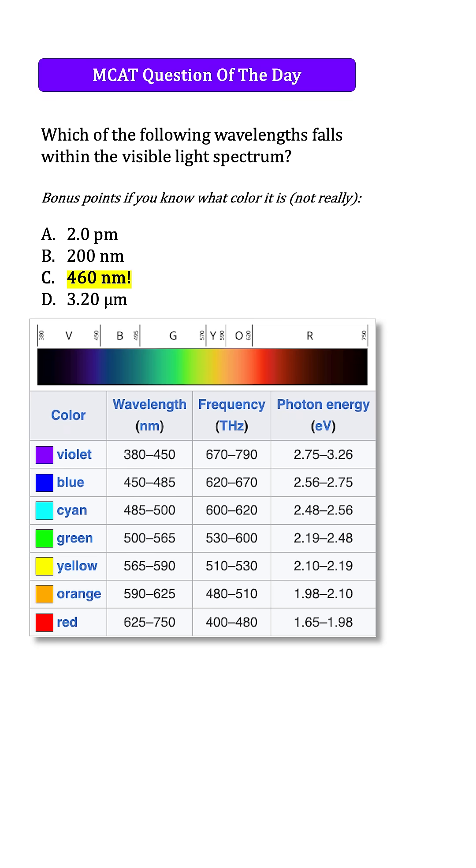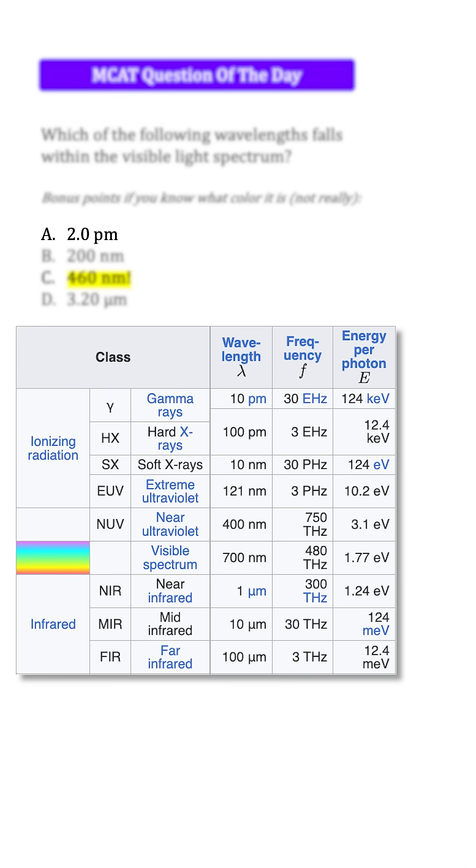So 460 would fall within the blue range. As for A, 2 picometers, this would fall in the gamma ray range, which starts at about 10 picometers and gets smaller and smaller.